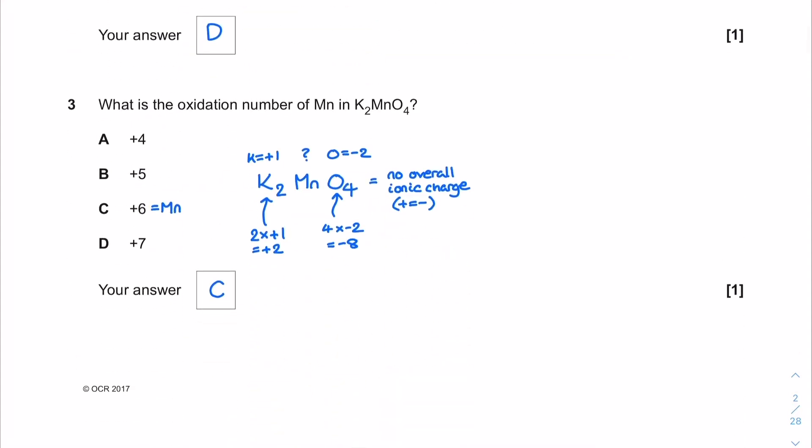Next one is oxidation number of manganese in K2MnO4. We don't know the oxidation number of the manganese but we assume common oxidation states for the other elements. Potassium has a common oxidation state of plus one and oxygen has a common oxidation state of negative two. I've got two lots of the potassium and four lots of the oxygen and I have no ionic charge overall on the formula which means all the pluses equal all the minuses. In order to get that balance and match this negative eight coming from all those oxygens and considering the positive two from the potassiums, the manganese would need to be plus six. The correct answer was C.